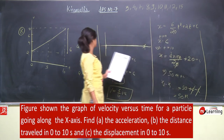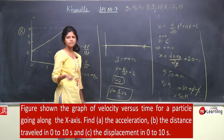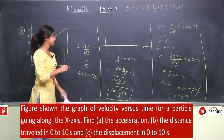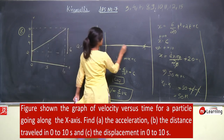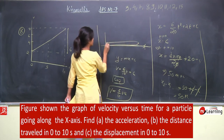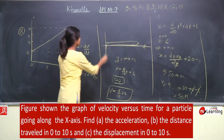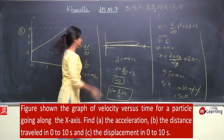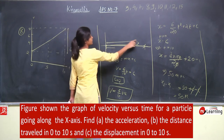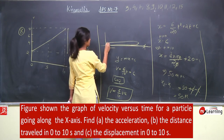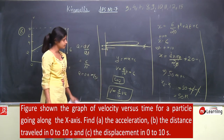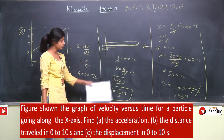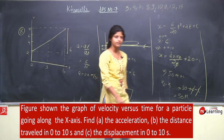Displacement भी इतना ही हो जाएगा — final minus initial. अगर बीच में कोई turning point आता और वापस आता, तो displacement और distance अलग-अलग होता। Distance पूरा हो जाता और displacement initial point और final point के बीच का distance। लेकिन यहाँ same direction में move कर रहा है, इसलिए distance और displacement दोनों same हैं — 50 meter.